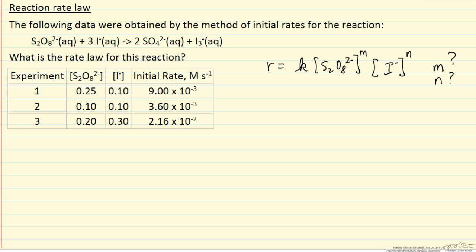The idea of initial rate is the concentrations of the reactants change very little during this initial rate measurement, so we can use the initial concentrations and we can essentially compare rates. So for example, if we look at experiments 1 and 2, the concentration of iodine ion is the same. So that means that change in the rate is only due to the change in the concentration of the S2O8 ion.